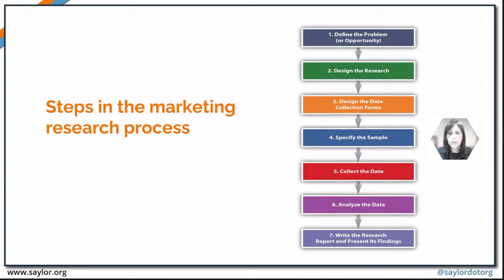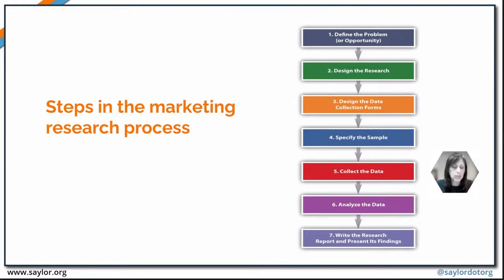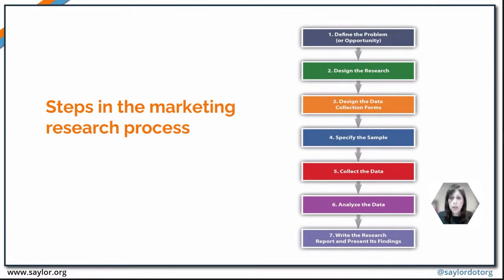You want to make sure you're asking the right people who will give you the information you need. Once you do that, you collect all the data. Then you're left with a large pile of information — going back to the marketing information systems process, it has to be relevant information. Then you analyze it: what does this mean, what is it going to tell us? Finally, you put together a research report, present your findings, and decisions are made.